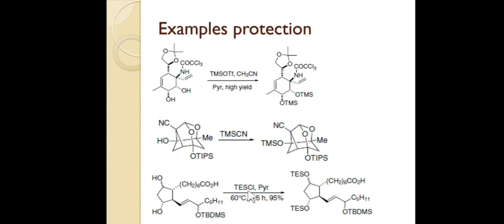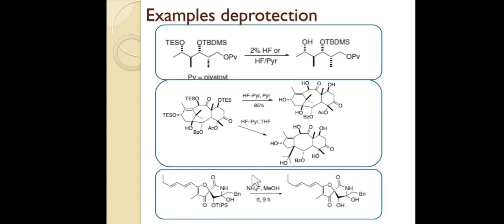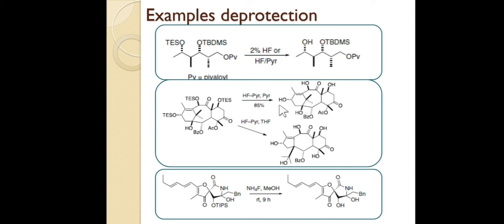Now for deprotection examples: using 2% HF or HF in pyridine, the less hindered TES is deprotected before TBDMS. With excess acid, both silyl groups are deprotected. In an example from Taxol synthesis, three TES groups are all deprotected with HF and pyridine to give three free OH groups. TIPS can be deprotected using ammonium fluoride — another fluoride source — converting the TIPS-protected alcohol back to the free OH.